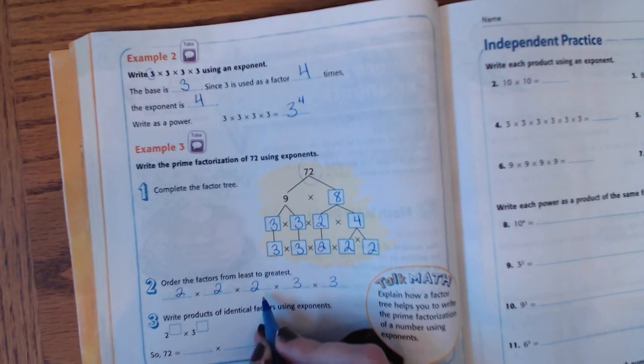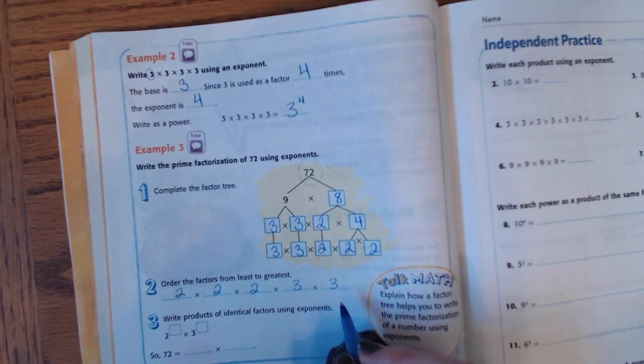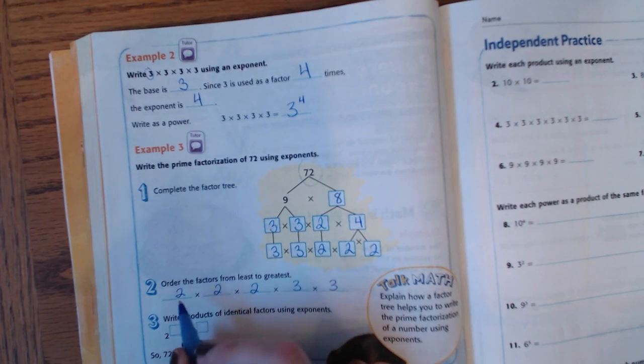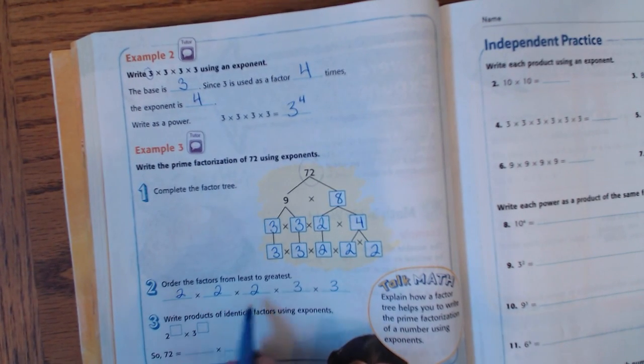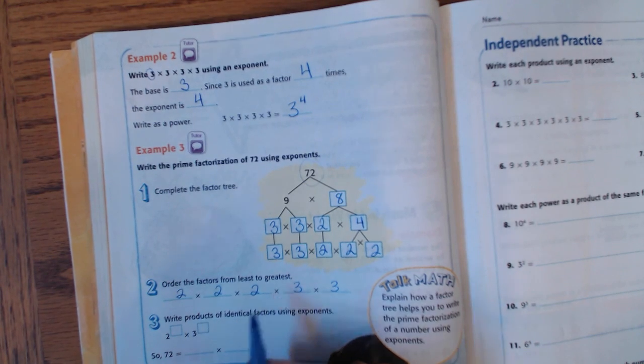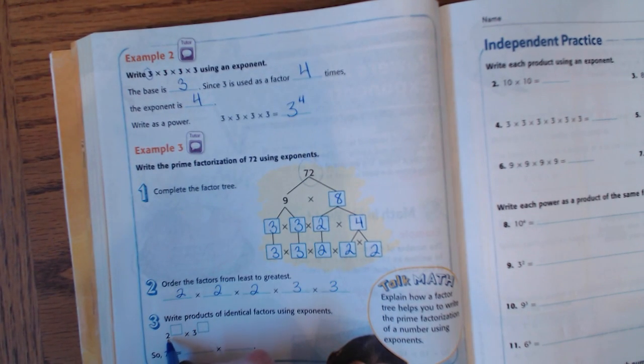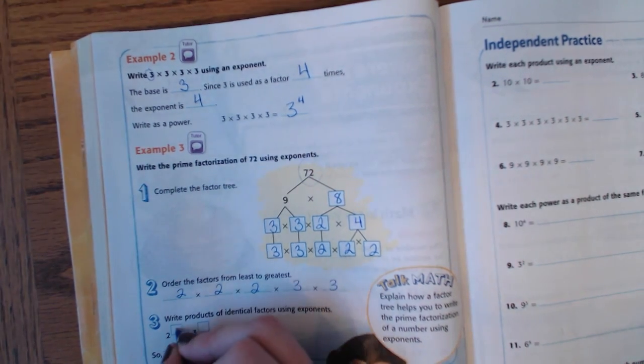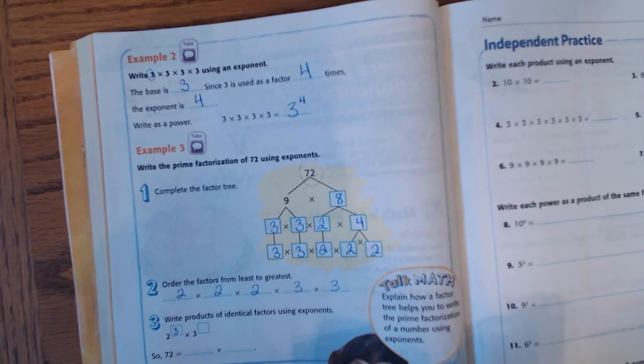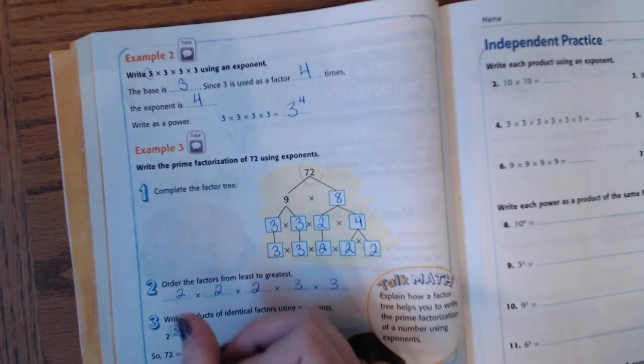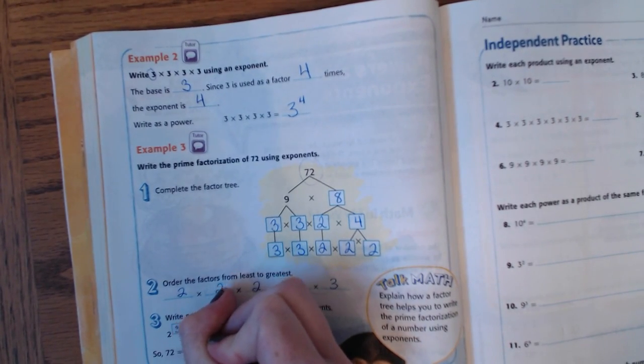Well, we have multiple twos and we have multiple threes, so that just means that we need to count how many twos we have. So, how many twos do we have? We have three twos. So, the exponent next to my two is going to be a three. And how many threes do I have? I have two. So, the exponent next to my three is going to be a two.